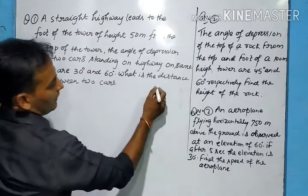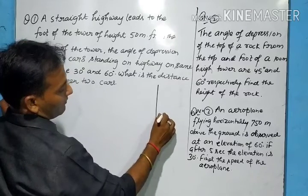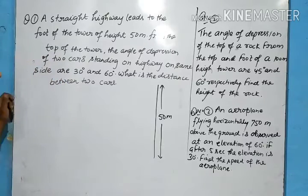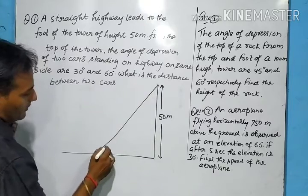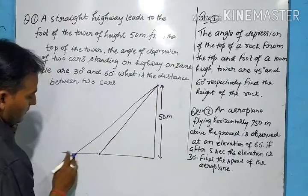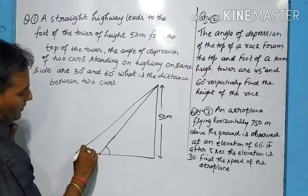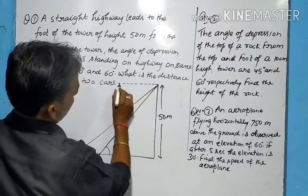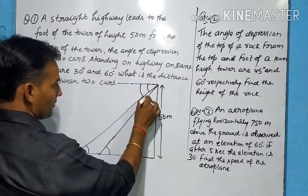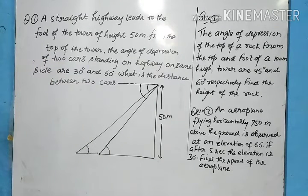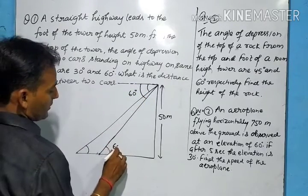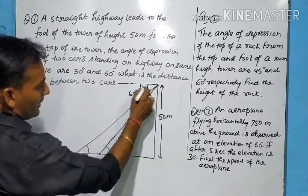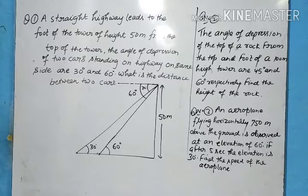A straight highway leads to the foot of a tower of height 50 meters — so we have a tower of height 50 meters. From the top of the tower, the angles of depression of two cars standing on the same side: one car is here and we observe it from the top, and the other car is here. For angle of depression, we draw one parallel line. This angle and this angle — one is 30 degrees and the other is 60 degrees. Using alternate angles, this will be 60 degrees and this will be 30 degrees.